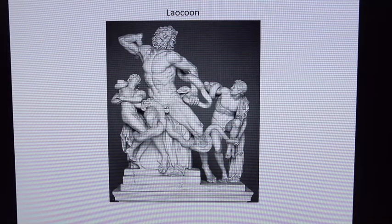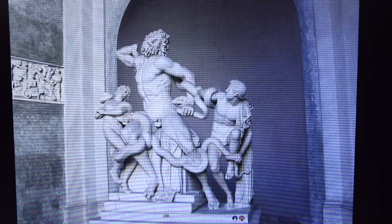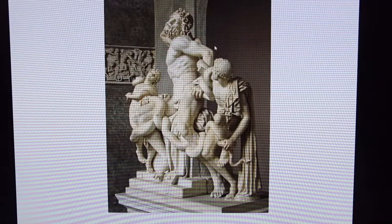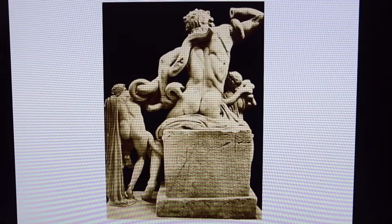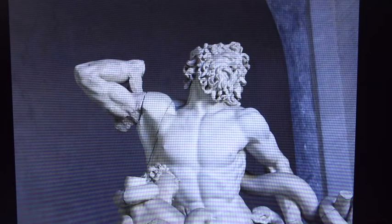The most famous one of course is the Laocoön — I've assigned a movie on it, please be sure you watch it because it's a really astonishing piece of art. It had a huge influence on Michelangelo. It's in the Vatican — I was just there, it's a beautiful work. Look at that very dynamic composition. The contrapposto of Laocoön, the high priest of Troy, is so intense — his face in agony after being bitten by the serpent that Hera sent to destroy Laocoön and his twin sons. It's one of the most amazing pieces of art I've ever seen.